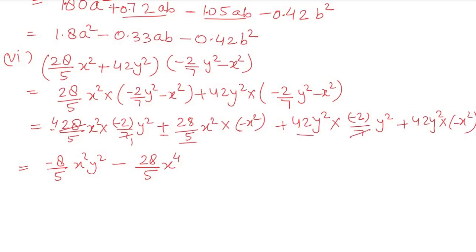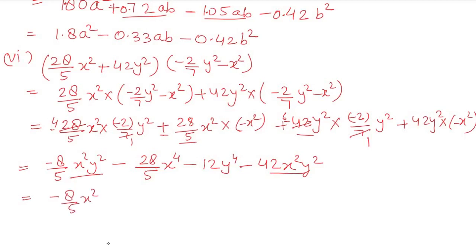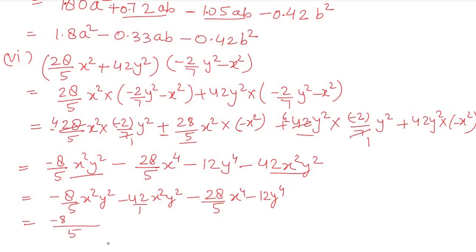Then 42y² × (-x²) = -42x²y². Identifying like terms, -8/5 x²y² and -42x²y² combine. Taking LCM of 5: (-8 - 210)/5 x²y² = -218/5 x²y².